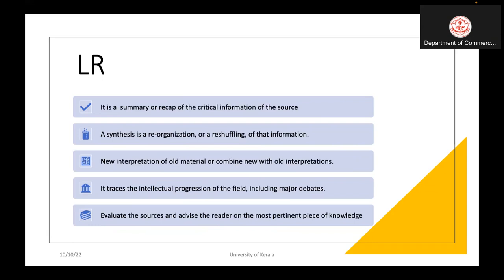A literature review addresses what the past literature says, what the present literature says, and what the future literature might say, so we can connect past, present, and future in a particular theme. It also evaluates sources and advises the reader on the most pertinent pieces of knowledge. These are the major features of a literature review.